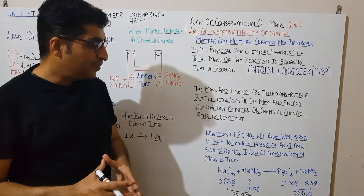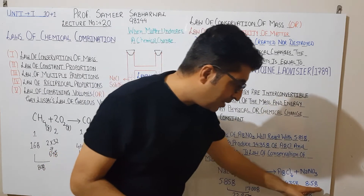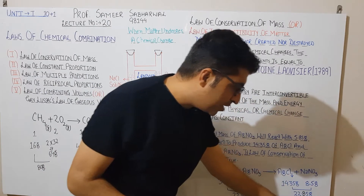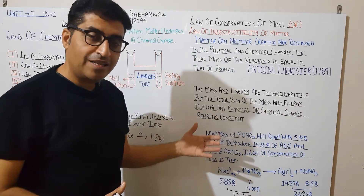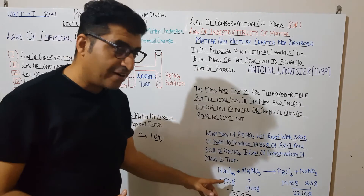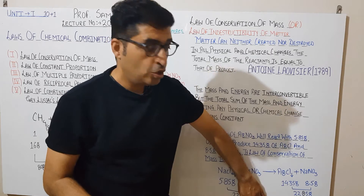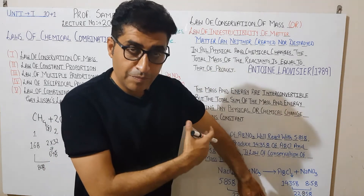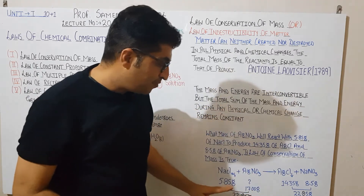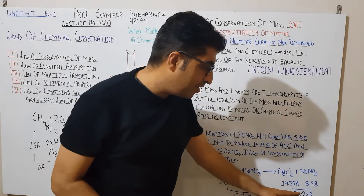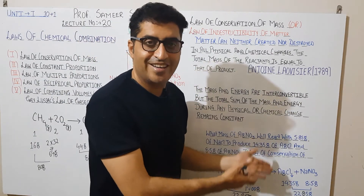After the reaction, the total mass is still 22.85 grams. NaCl used was 5.85 grams and silver nitrate used was 17 grams, totaling 22.85 grams. This confirms the Law of Conservation of Mass — the total mass before and after the reaction remains the same.